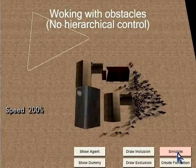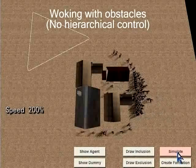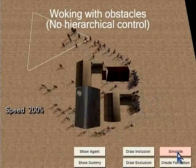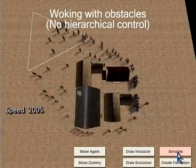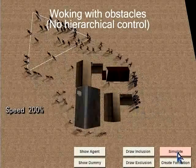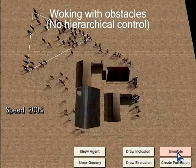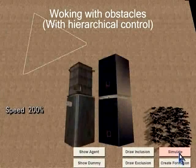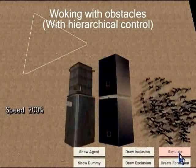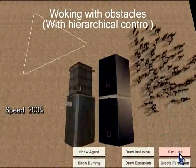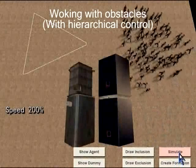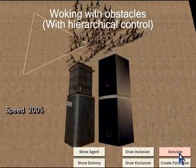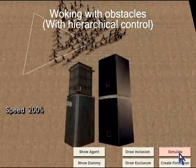If we only apply local collision avoidance to each agent separately, the formation is easily broken since every agent only follows its own optimal path. Our hierarchical navigation control can move the whole group more consistently while changing the formation at the same time.